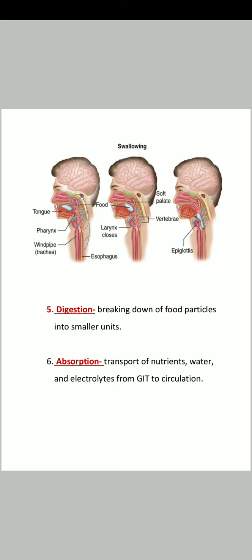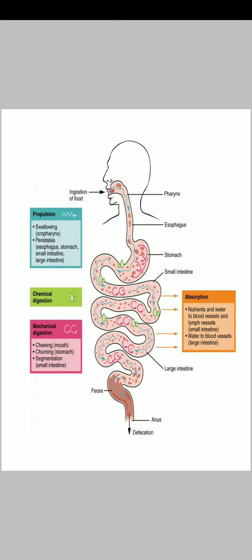Next is absorption. Absorption means transport of nutrients, water, and electrolytes from GIT to circulation. Nutrition, vitamins, minerals, and electrolytes — the content including water is absorbed in our intestine. Waste material is absorbed in the large intestine, while the rest of the nutrients absorb into blood circulation.